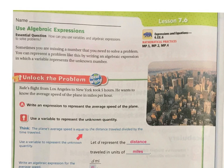So think, the plane's average speed is equal to the distance traveled divided by the time traveled. So use the variable to represent the unknown quantity. So let D represent distance traveled in units of miles.